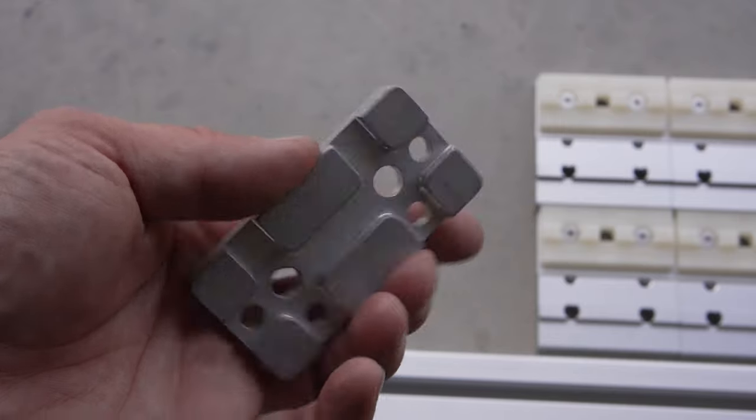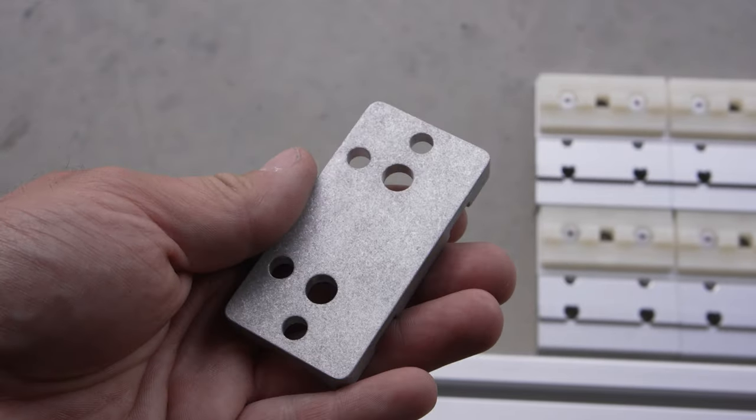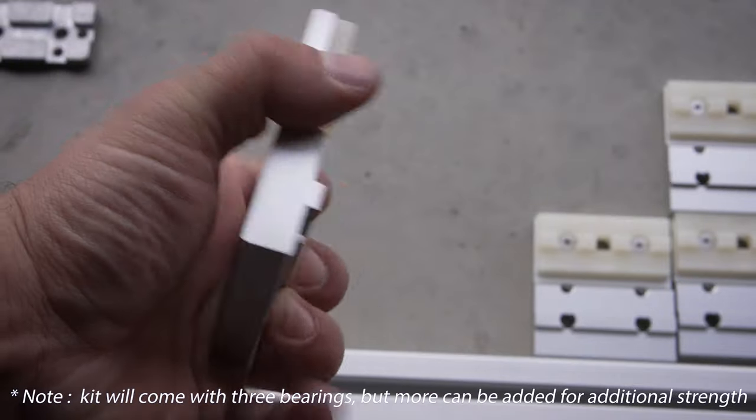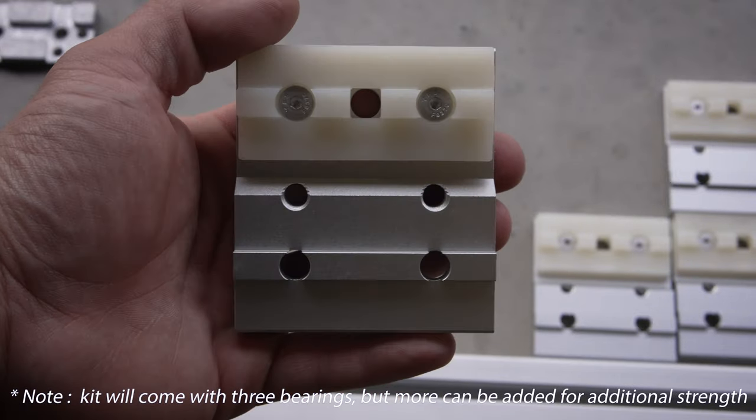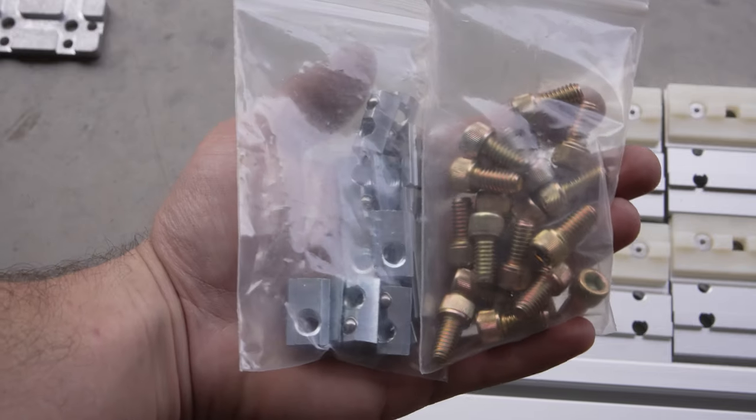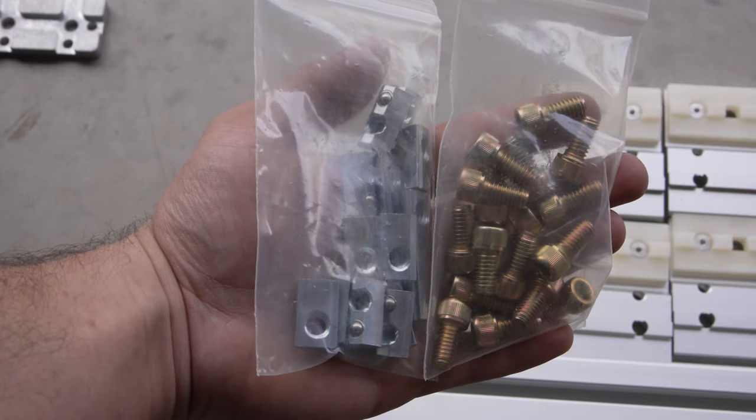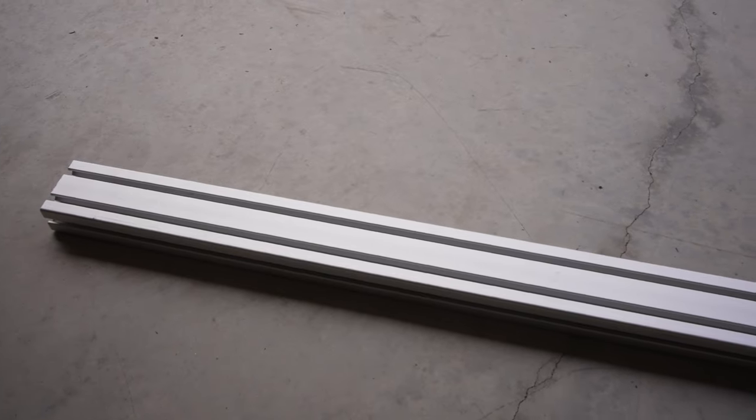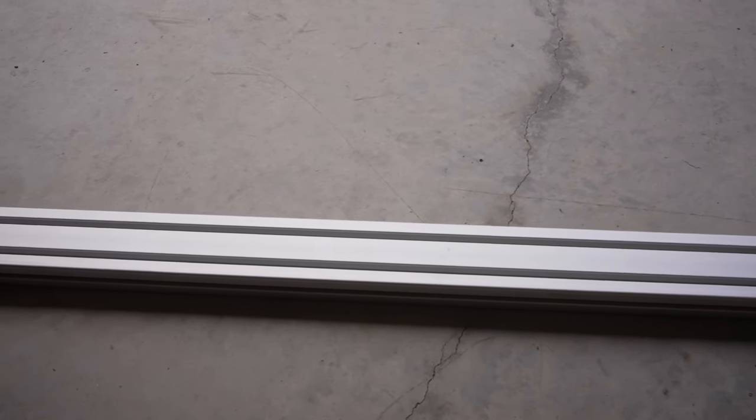Your kit will contain end plates, linear bearings, drop-in T-nuts and hardware, and the silver anodized bar to match the length of your bed rack.